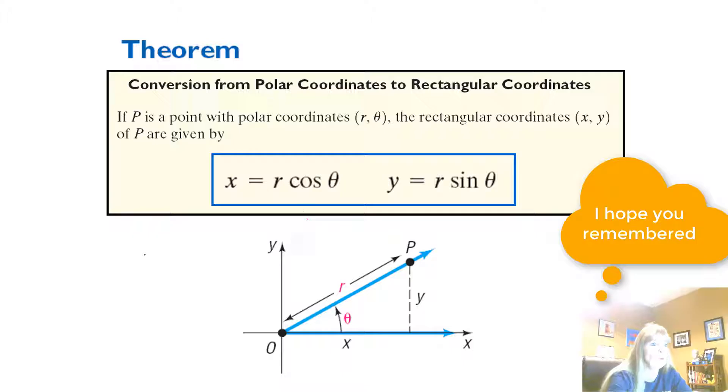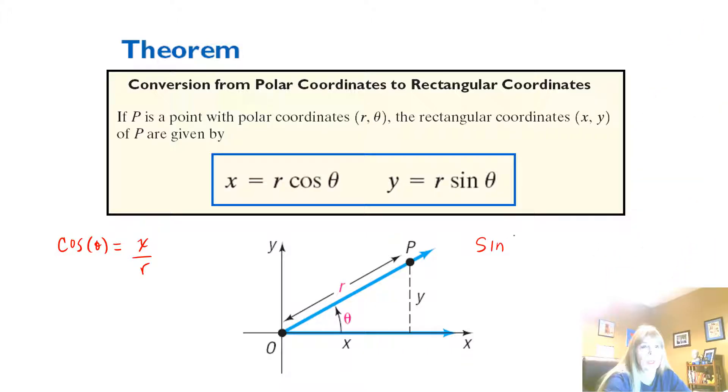If you remember, we said that the cosine of theta was x over r, and sine was y over r. Well, if you notice, all we've done here is solved both of these for my x and y, my rectangular coordinates. So it's pretty easy then to actually change from polar coordinates to rectangular coordinates.